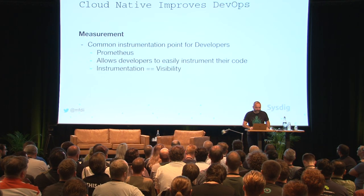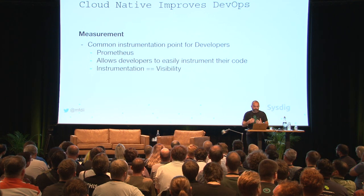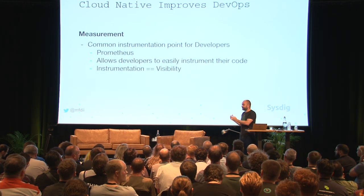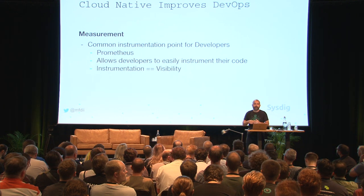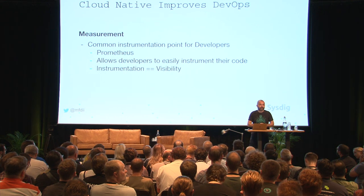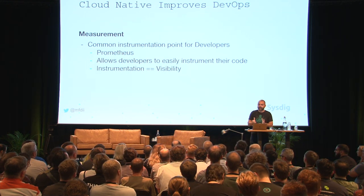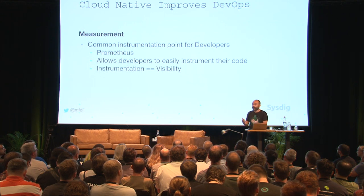Let's jump into measurement. Measurement is this idea of having a common instrumentation point for developers, and cloud native gives us that through something called Prometheus. Prometheus allows developers to write toward a standard spec for instrumenting their applications, making it much easier to scrape data out of those applications. We now have a standard — a pseudo-standard — of how developers can instrument their applications. And as an operations person, I can pull those metrics and store them in a data store to go back and look at the overall health of the application.